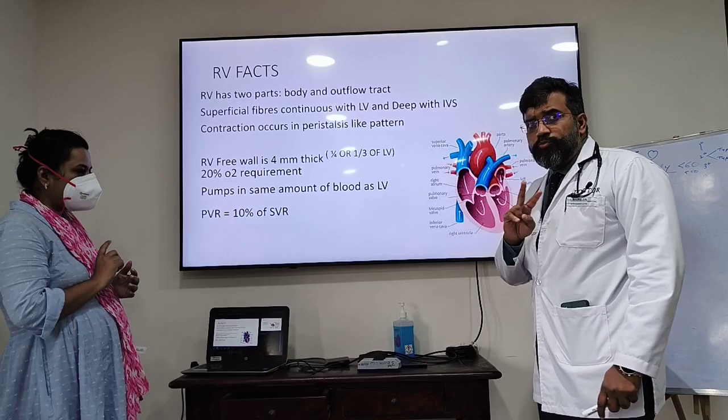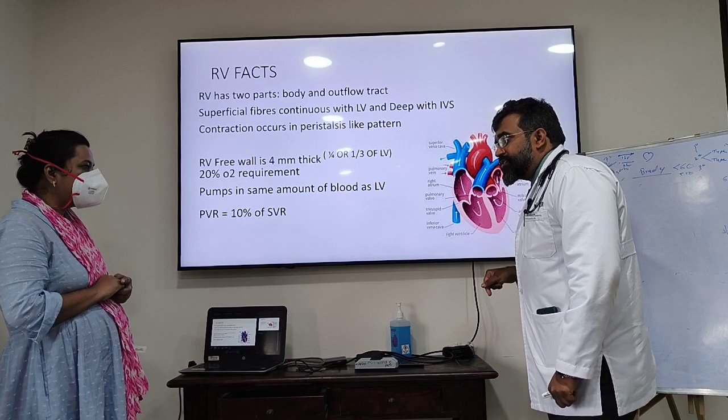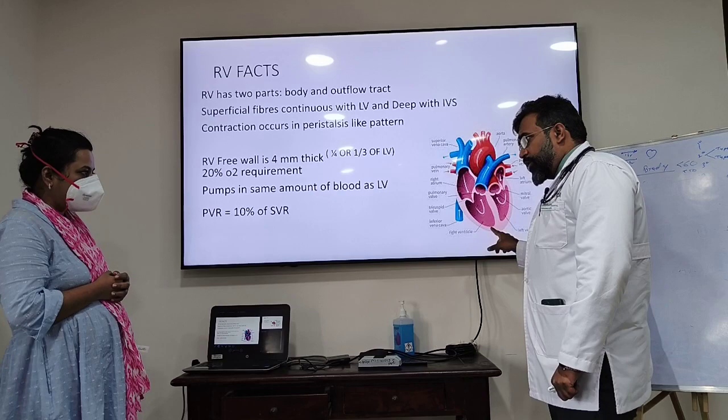Why should you know all three parts? Because problems will occur in these areas. Here, if there is a problem, you know there is regurgitation. Here, there is McConnell's sign for coronary involvement. And the outflow tract will tell you about pulmonary arterial hypertension.